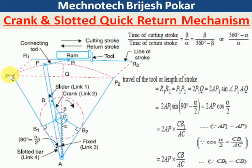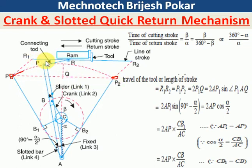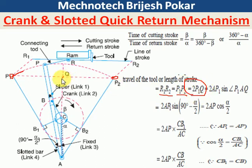The travel of the tool, or length of stroke, is the distance from the end position P1 to P2 of the slotted bar's pivot point. P1P2 equals R1R2, and P1P2 can be written as 2 × P1Q, since Q is the midpoint. So 2 × P1Q needs to be calculated.